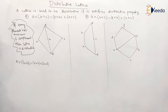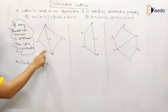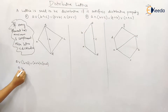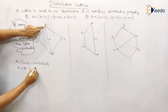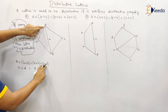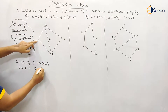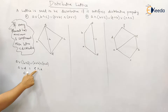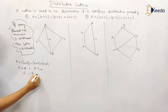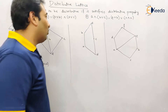Now let us check whether this property is getting satisfied or not. This is the glb of b and d — b and d's glb is obviously d. So it will be a join d. Now a join b: a lub b is e. And glb of a and d: a meet d is a. A meet d is again a. E meet a is a. So this lattice is satisfying the distributive property.